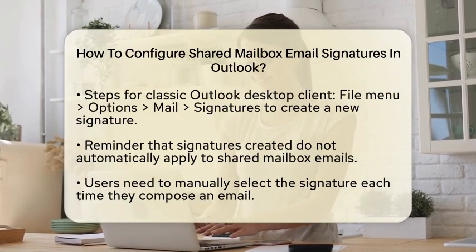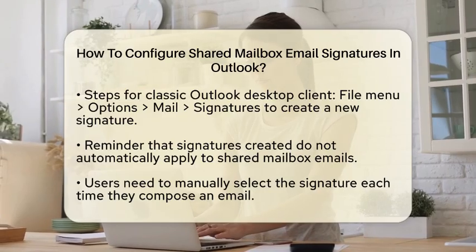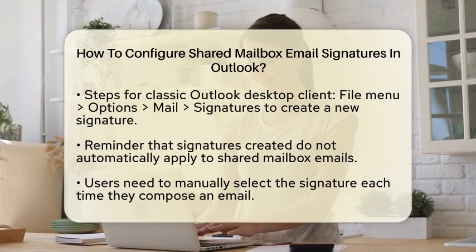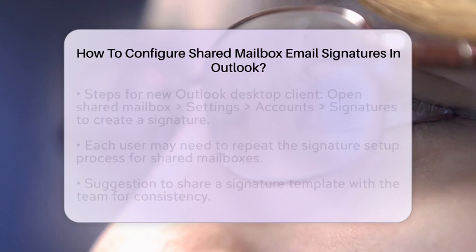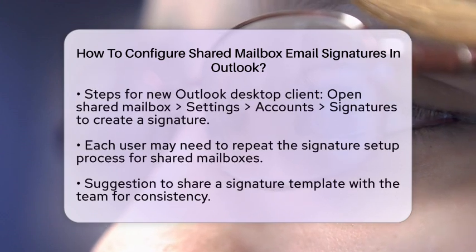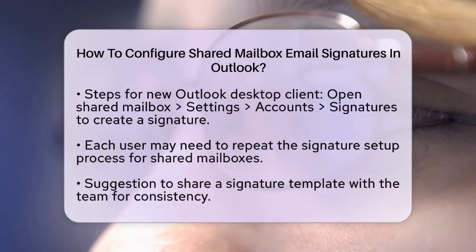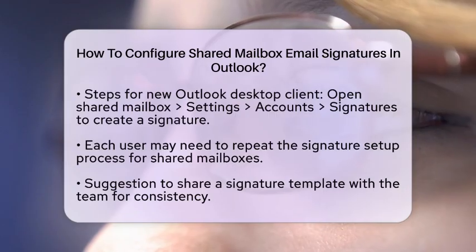If you are using the new Outlook desktop client, the process is similar. Open the shared mailbox, go to Settings, then Accounts, and select Signatures. You can create a signature here, but again, it may not be available to all users. Each person accessing the shared mailbox might need to repeat this process.